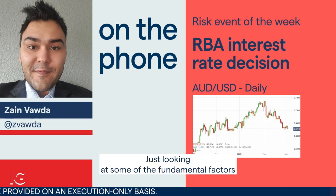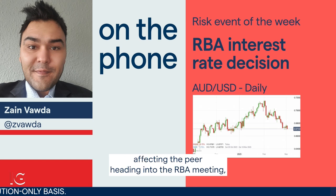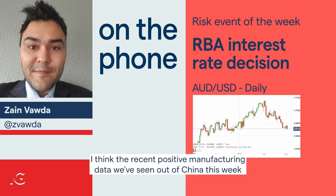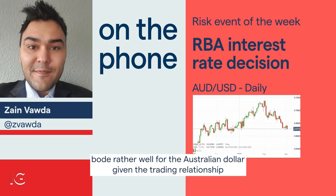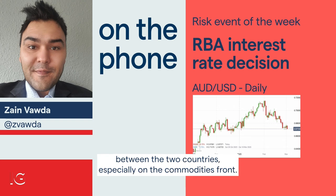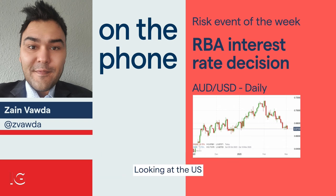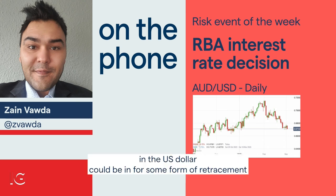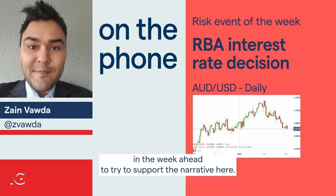Just looking at some of the fundamental factors affecting the pair heading into the RBA meeting, I think the recent positive manufacturing data we've seen out of China this week bode rather well for the Australian dollar, given the trading relationship between the two countries, especially on the commodities front. Looking at the US dollar side of things, the recent repricing of the Fed funds peak rate — I do believe most of this has already been priced into markets, and the US dollar could be in for some form of retracement in the week ahead, which further supports the narrative here.